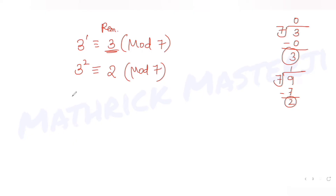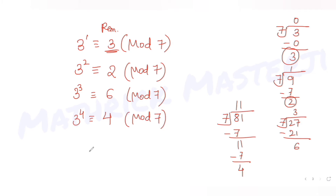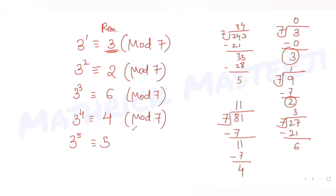Further, 3^3 is 27; dividing 27 by 7 gives 7×3=21, remainder 6. So 3^3 mod 7 equals 6. Then 3^4 is 81; 81 divided by 7 gives remainder 4, so 3^4 mod 7 equals 4. And 3^5 is 243; 243 divided by 7 gives remainder 5, so 3^5 mod 7 equals 5.